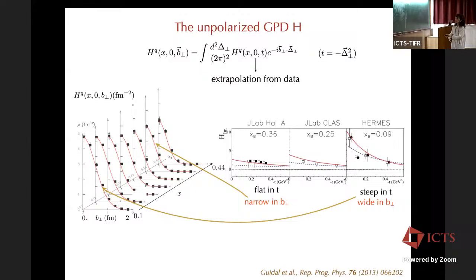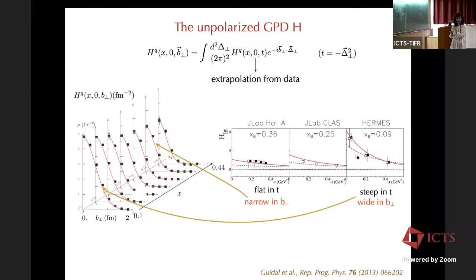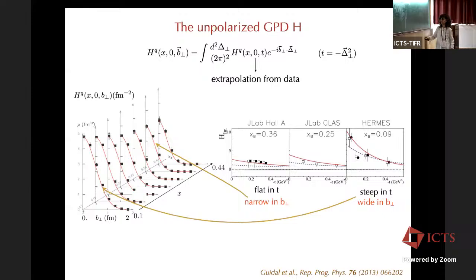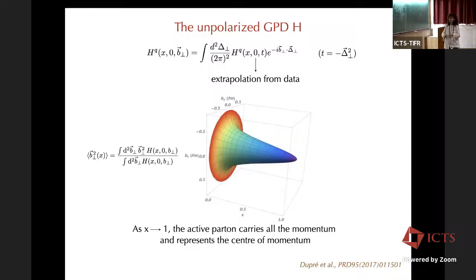Experimentally, we have this distribution in t at different values of x — data from JLAB and HERMES. When we make the Fourier transform: a flat distribution in t becomes a narrow distribution in B-perp, while a steep t-dependence means a wide distribution in B-perp. Going from low x to high x, you see the distribution goes from wider to more narrow. From the data, you can reconstruct as a function of x and B-perp our three-dimensional map.